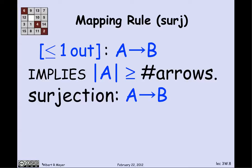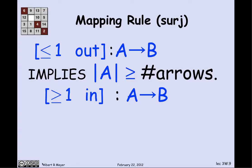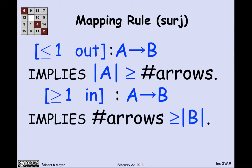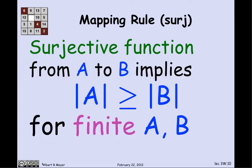When it's a surjection, there's an arrow coming into every element of B, so there must be at least as many arrows as elements in B. Putting these two pieces together: the size of A is greater than or equal to the number of arrows, and the size of B is less than or equal to the number of arrows. So we have the mapping rule for surjections: if there's a surjective function from A to B, then |A| ≥ |B| for finite A and B.